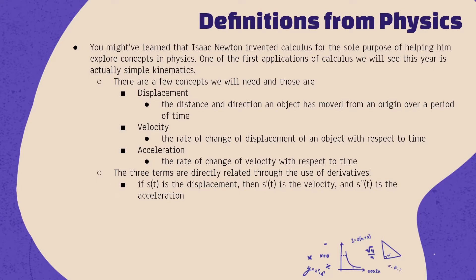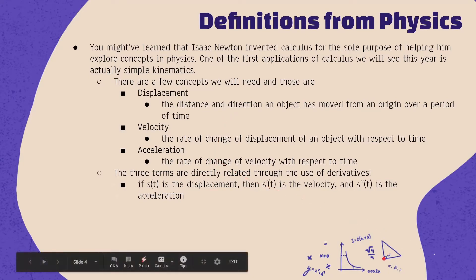The concepts we need for today are displacement, velocity, and acceleration. Displacement is essentially the distance and direction an object has moved from the origin over a period of time. So if I started right here, my displacement when I moved over there would be that distance as well as the direction I moved in.